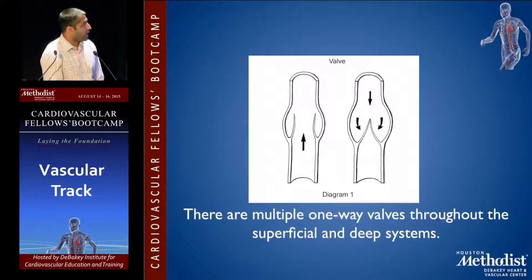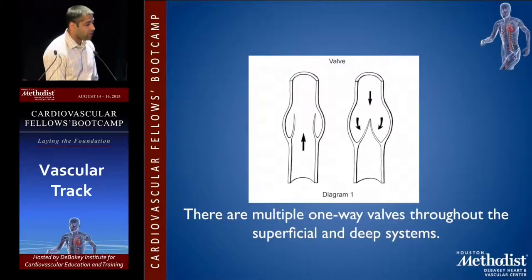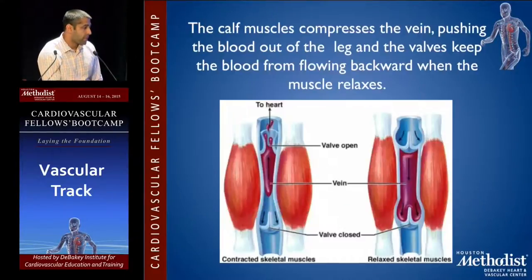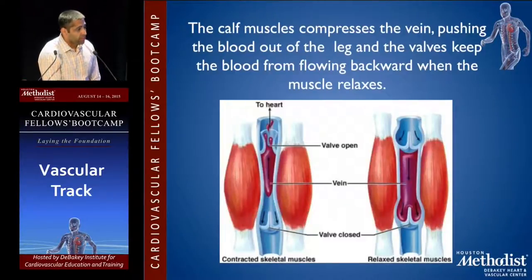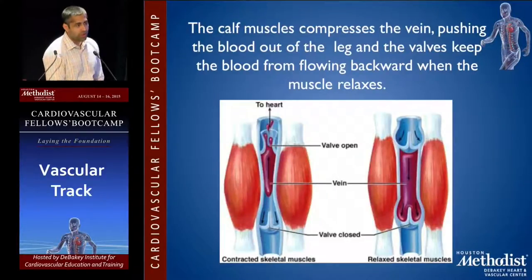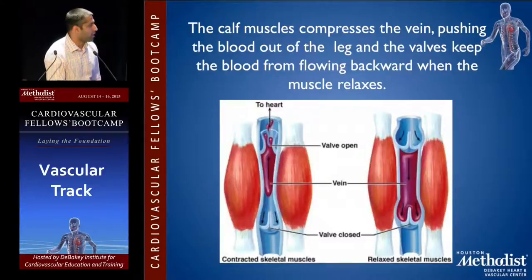There are multiple one-way valves throughout the superficial and deep venous system, designed to create unidirectional flow and prevent venous insufficiency. The calf muscles compress the vein, push the blood out of the leg, and the valves keep the blood from flowing backwards when the muscle relaxes. This is why occupations with walking tend to reduce the risk of varicose veins.